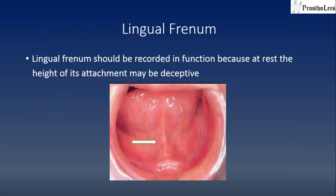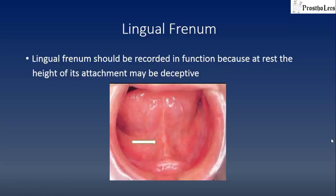The lingual frenum should be recorded in function because at rest the height of its attachment may be deceptive. You can see here the ventral part of the tongue with the lingual frenum attached to the crest of the residual alveolar ridge. At rest you may feel the frenum is attached at a low level, but during function it reveals its actual level of attachment and may dislodge the denture if not recorded properly.